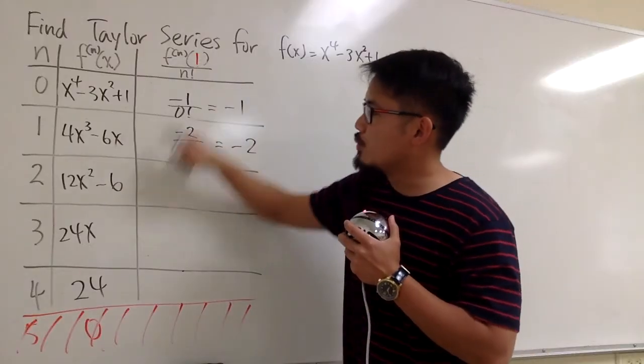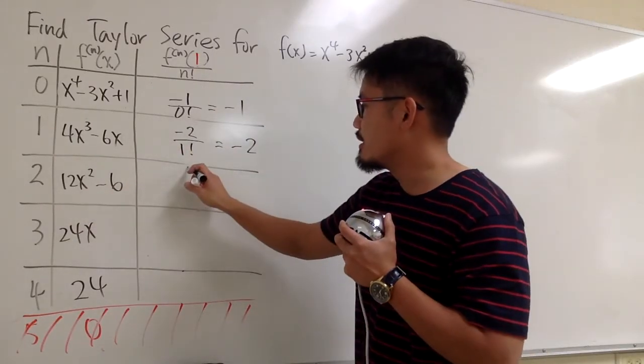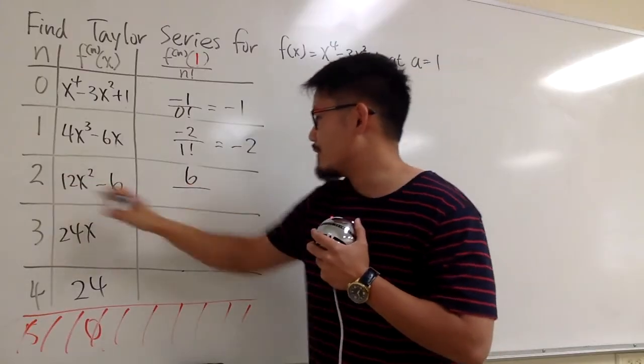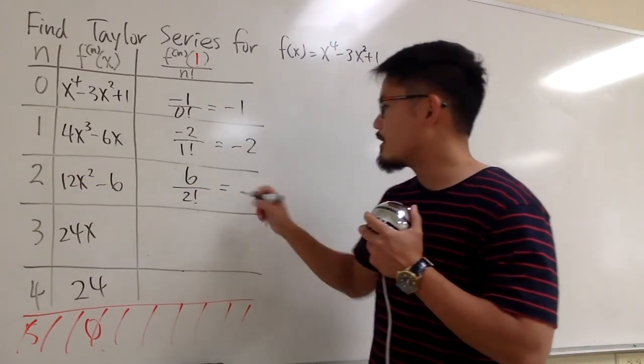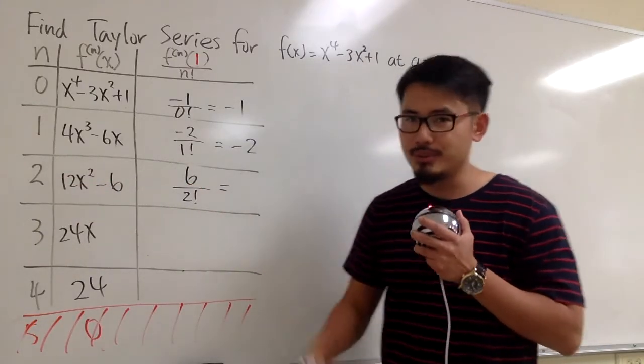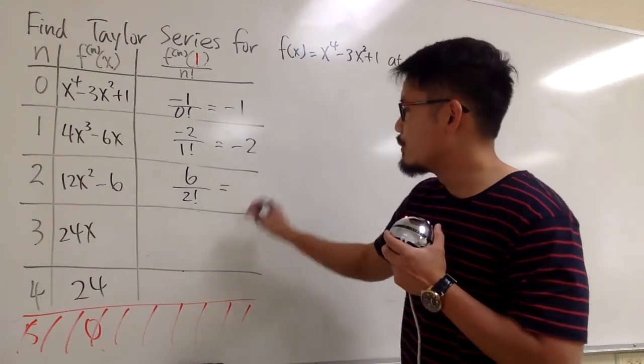Next, plug in 1 into here. 12 minus 6, we get 6 over 2 factorial. 2 factorial means 2 times 1, which is 2. 6 divided by 2, which is 3.